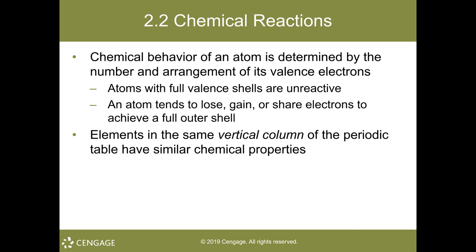Valence electrons are the way in which bonding occurs. The first shell holds two electrons and the second shell holds eight electrons. The third shell also holds eight electrons. Please keep this in mind for chemical bonding.